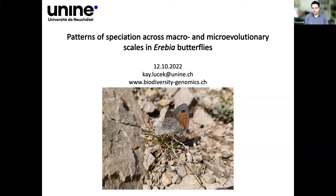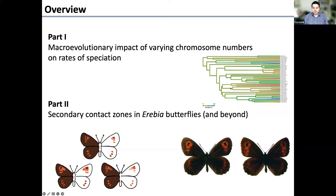My presentation has two parts. The first is on the macroevolutionary impact of varying chromosome numbers and rates of speciation, and the second part looks at secondary contact zones in Aricia butterflies, and also a bit beyond.